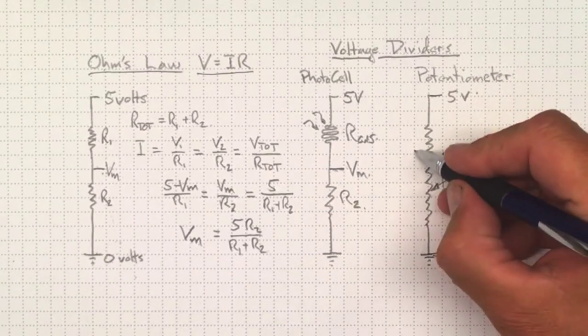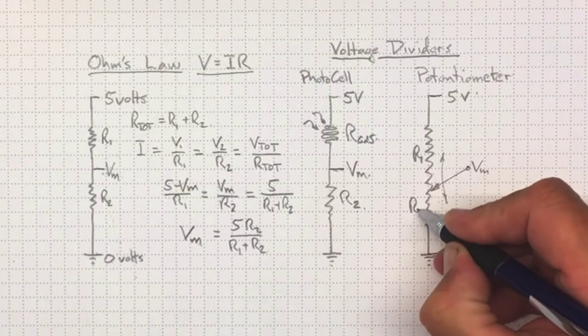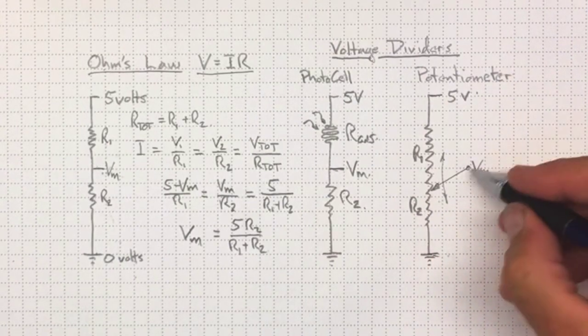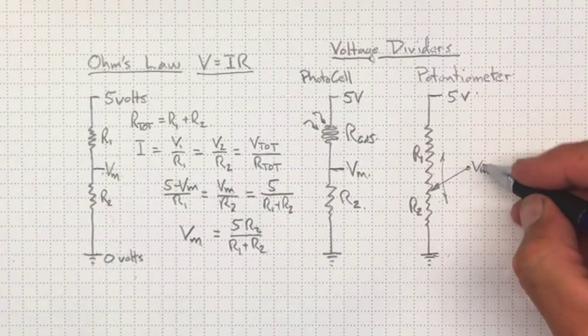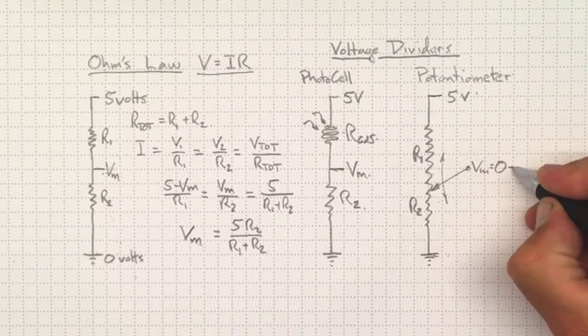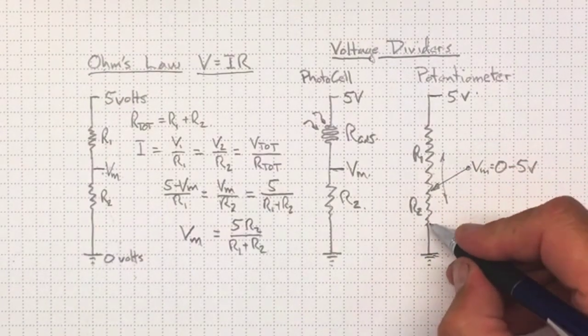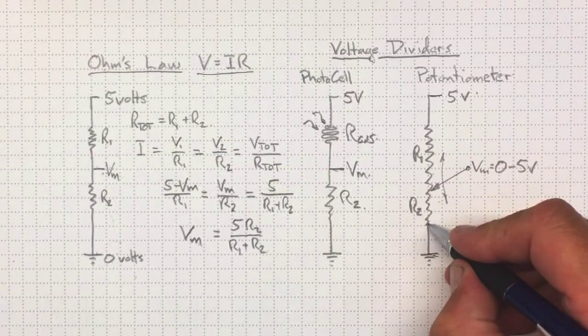And basically it's moving back and forth along that resistance. So we can vary and have R1 on this side of the wiper and R2 on that side of the wiper. And the result is VM will go anywhere from zero to five volts, depending on the position of the potentiometer.